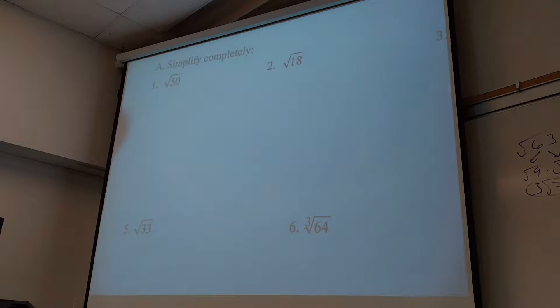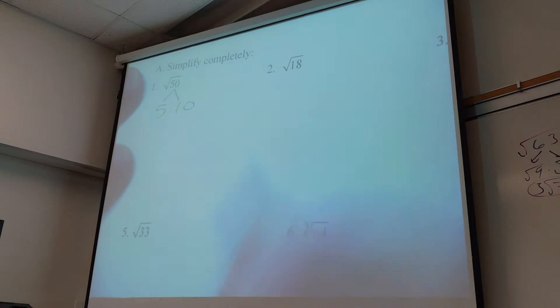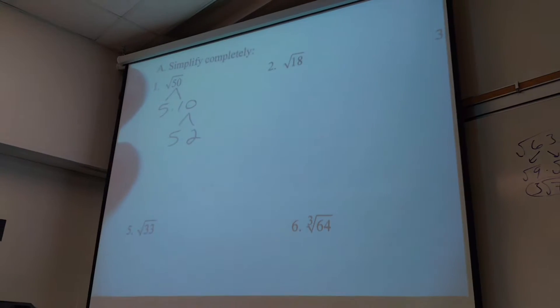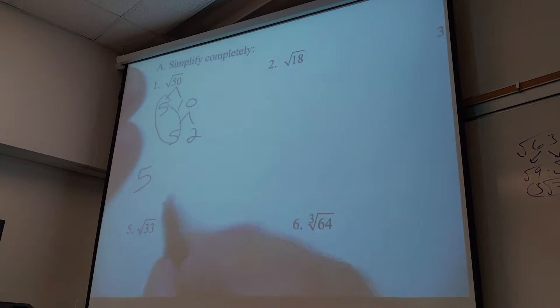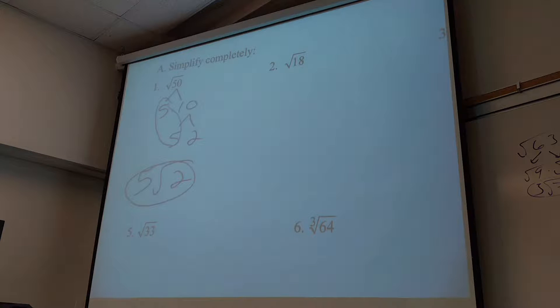Let's start off with that answer already on the board. Since I got it with method one, let me show you method two. Five times ten is fifty, and then ten is five times two. What do I see two of? Two fives, so I can put a five out front and the poor little two is left inside. I prefer this method because it's much clearer why there's a five there, because the square root of twenty-five is five.